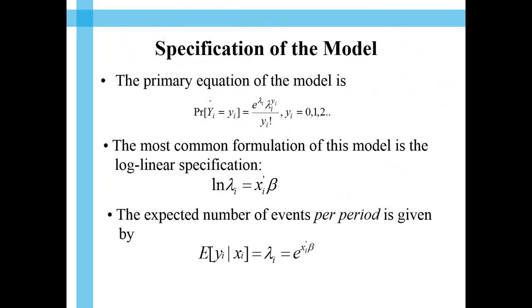Specification of the model. So, how do we specify this? This is specified like this. You already see, it's very similar to what you see in a Poisson distribution. So, probability that y takes a value of something,